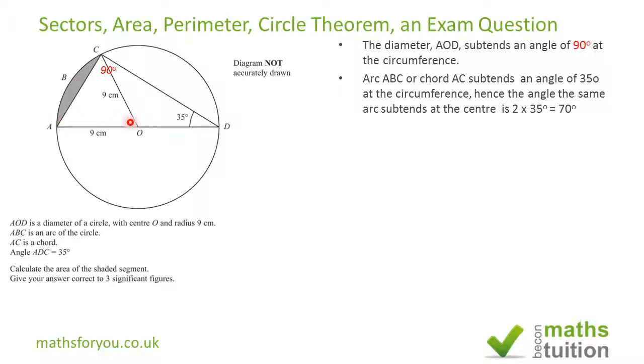So this angle, angle AOC, is 70 degrees. I need to find the area of this triangle, and for that we use the formula 1/2 ab sin C, where a and b are the lines that contain the angle in question. In this case, a and b are both 9 cm, so the area of triangle AOC will be 1/2 × 9 × 9 sin 70°, and 9 × 9 is 9 squared.